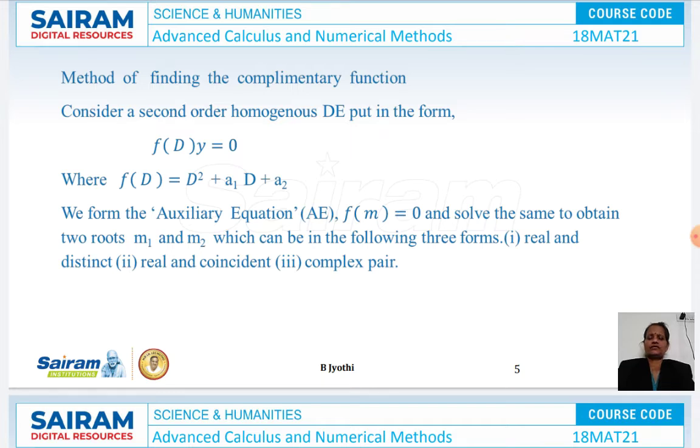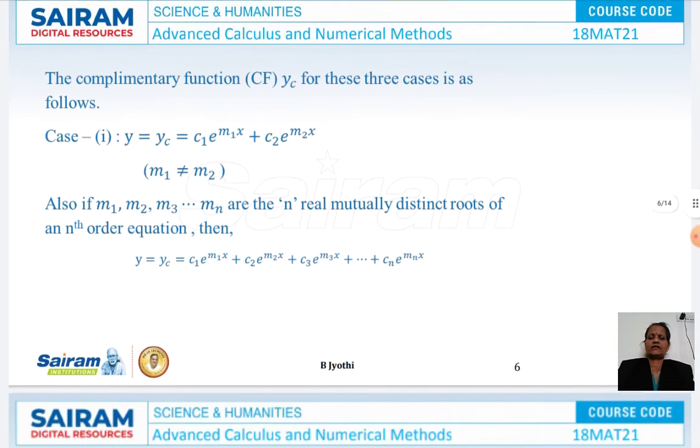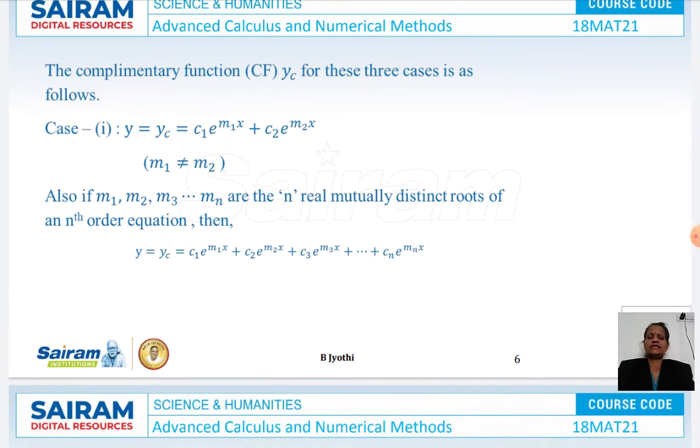The roots can be in three forms: real and distinct, real and coincident, and complex pair. Let us see each case.